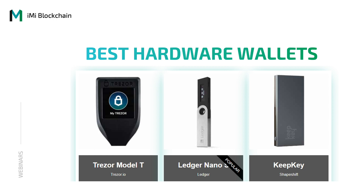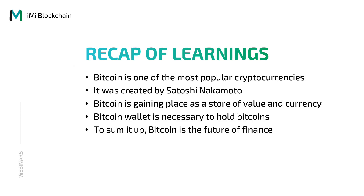To recap: if you are new into cryptocurrencies, then you should get the Ledger Nano S. If you're serious about cryptocurrencies and you need the best only, then go for the Trezor Model T. As a summary of what we've learned: Bitcoin is a really promising and popular cryptocurrency, created by an unknown person with the nickname Satoshi Nakamoto. Bitcoin is gaining place as a store of value and currency. It solves the problems of security and transparency in existing currencies. In order to hold Bitcoin, you need a Bitcoin wallet. In conclusion, Bitcoin is the future of finance.